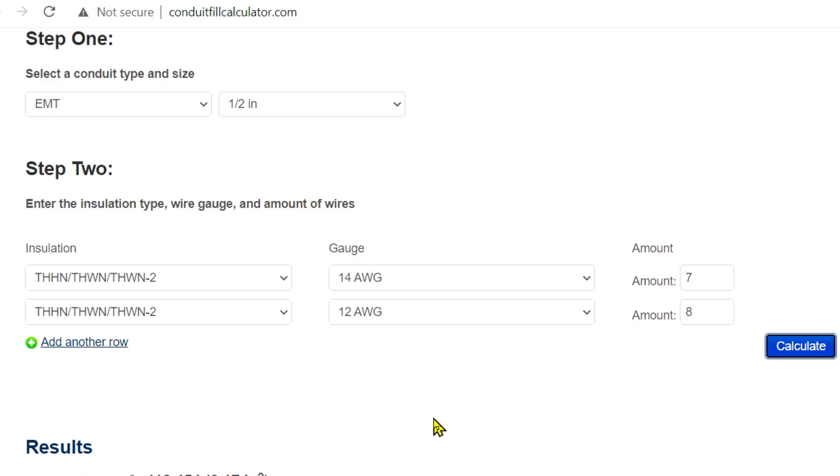So here we are at conduitfieldcalculator.com. I actually have this as an app on my cell phone. We've selected EMT half-inch, and here's the type of wire: THHN for both the 14-gauge and the 12-gauge. I've selected 14-gauge and 12-gauge.